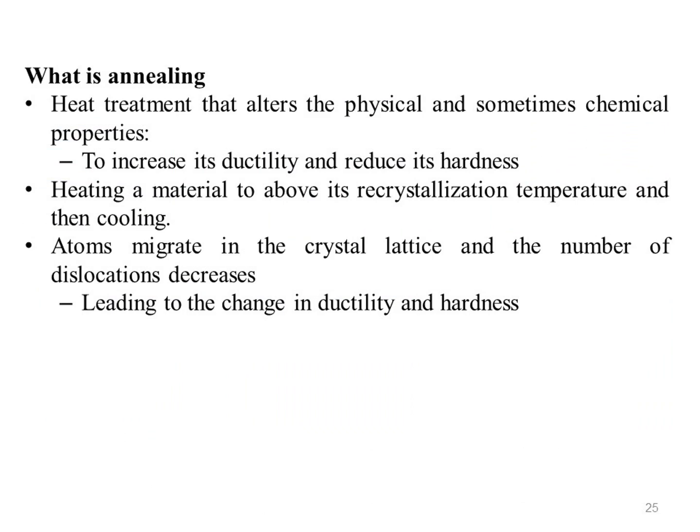What is annealing? Annealing in metallurgy and materials science is a heat treatment that alters the physical and sometimes chemical properties of a material to increase its ductility and reduce its hardness, making it more workable. It involves heating a material to above its recrystallization temperature, maintaining a suitable temperature, and then cooling. In annealing, atoms migrate in the crystal lattice and the number of dislocations decreases, leading to changes in ductility and hardness.